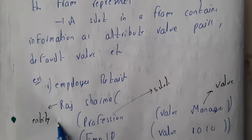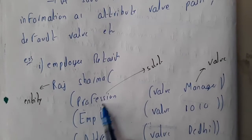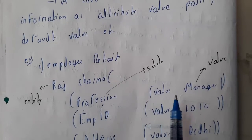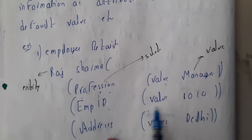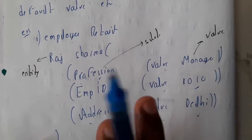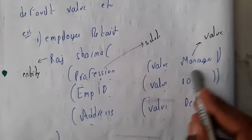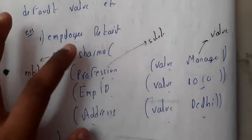He is nothing but the entity. And the professor Raj Sharma, professor value, manager, employee ID value, some value, address value Delhi, like this. So this is nothing but a slot and this is the slot value. In this way we will be representing.